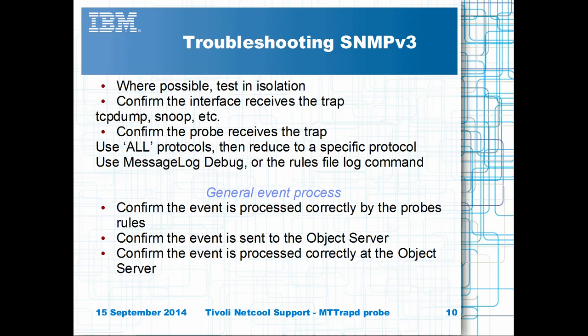Typically it is best to test trap or inform reception in isolation in a test environment. It is possible to resend traps using netCAT, however it is best to use the NetSNMP snmptrap command in the first instance.